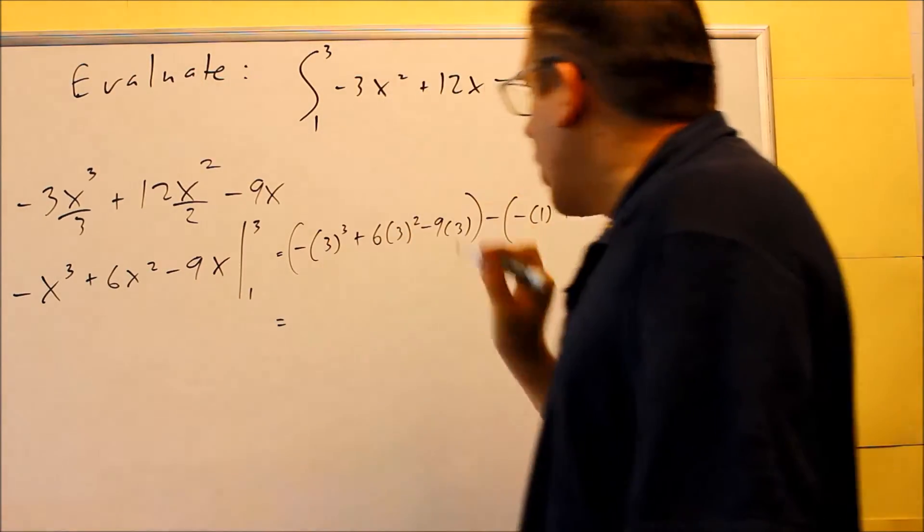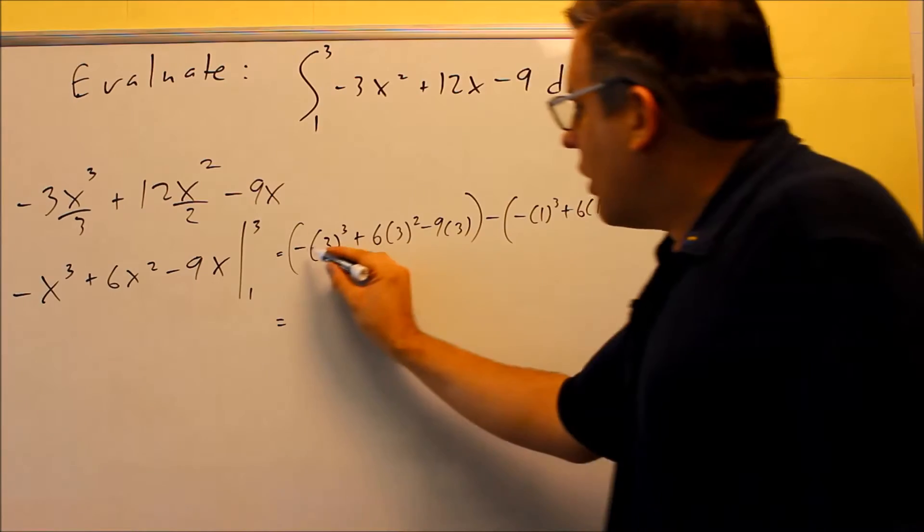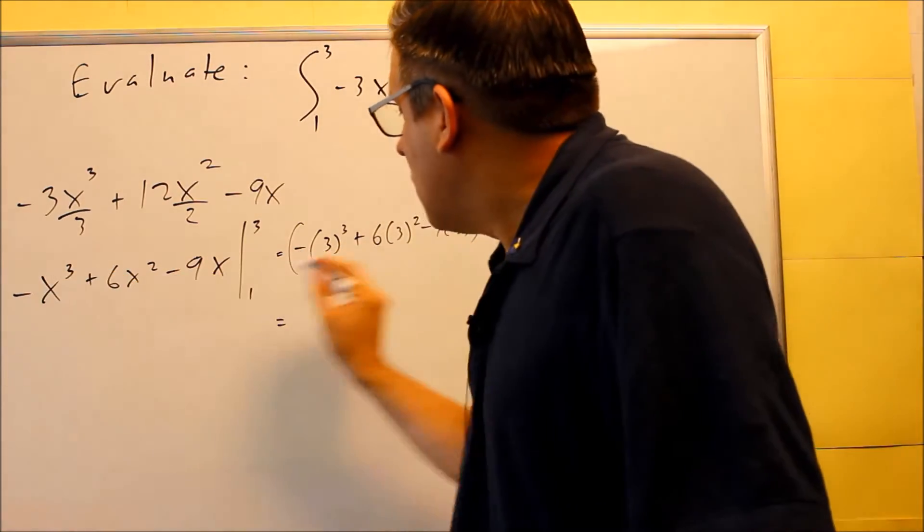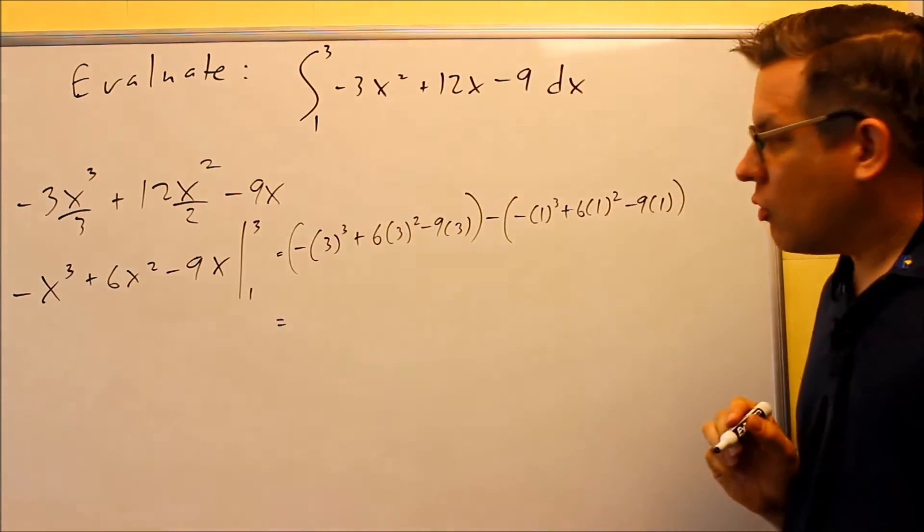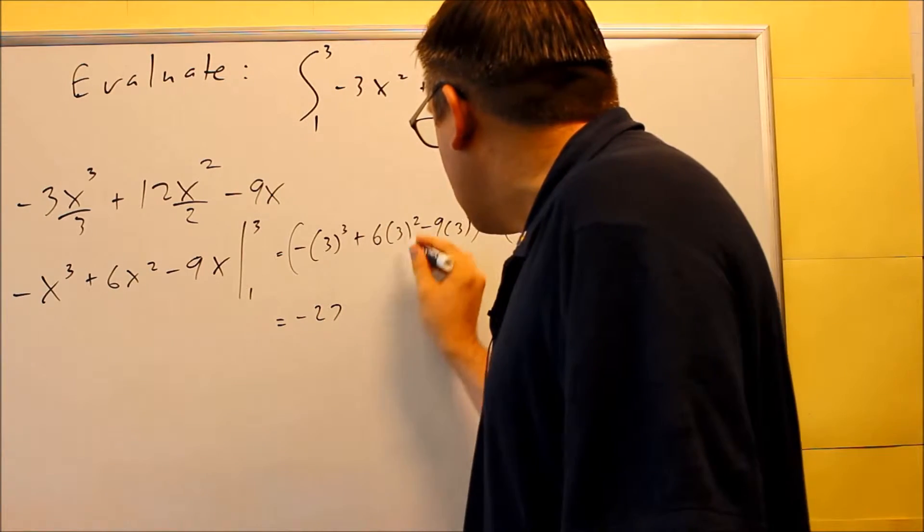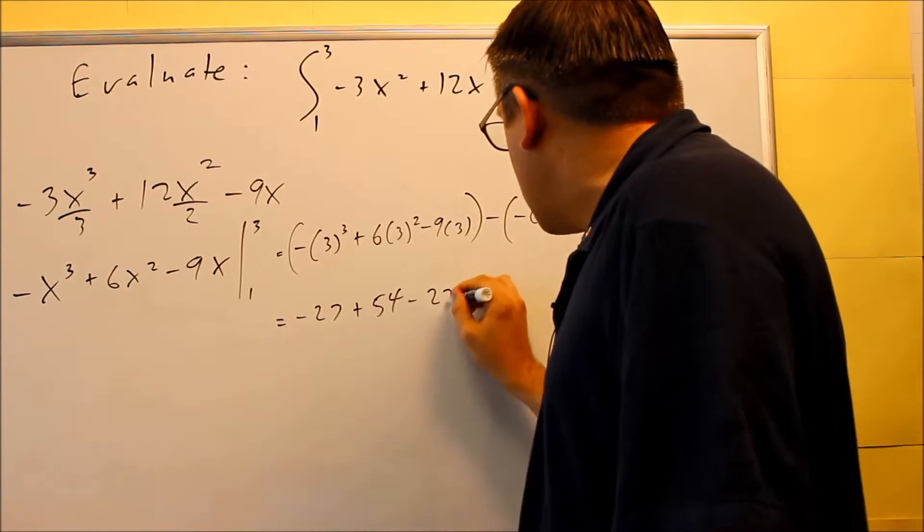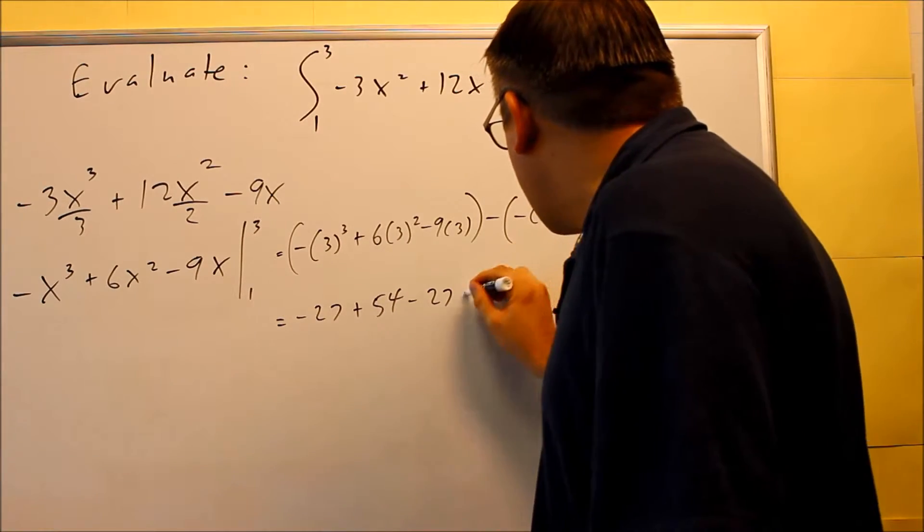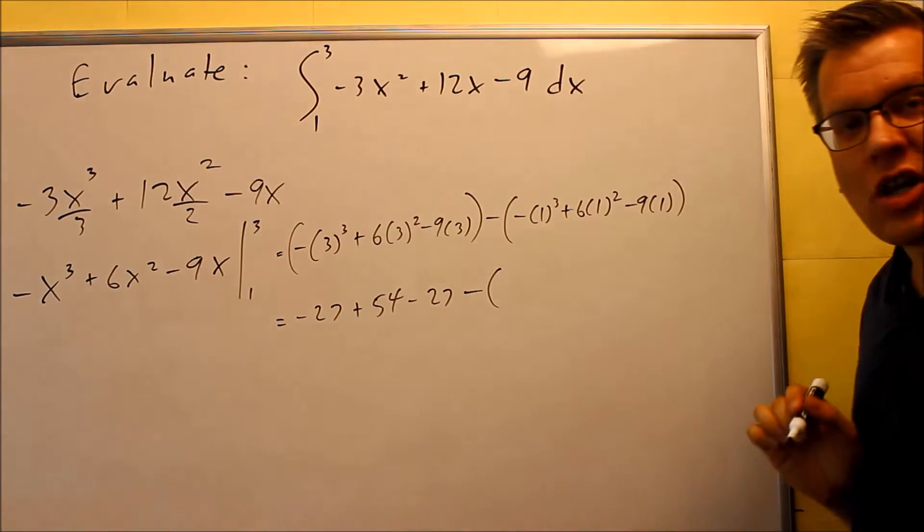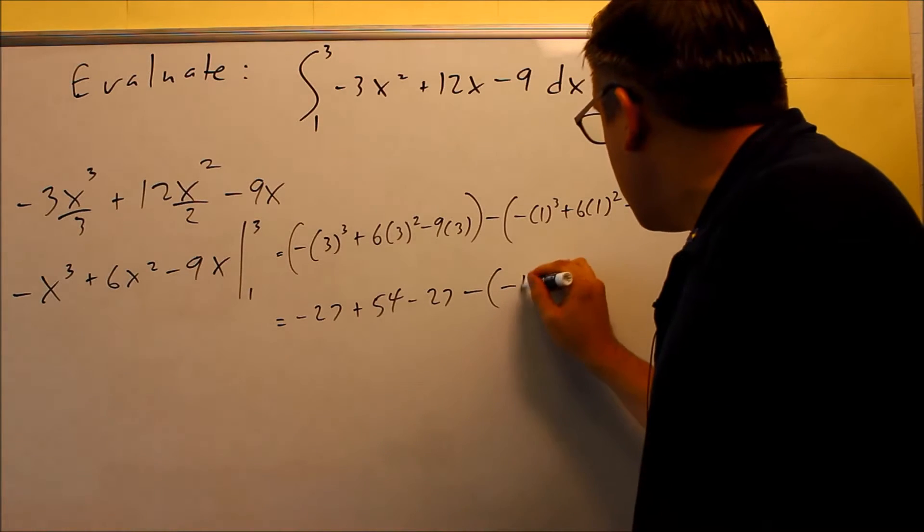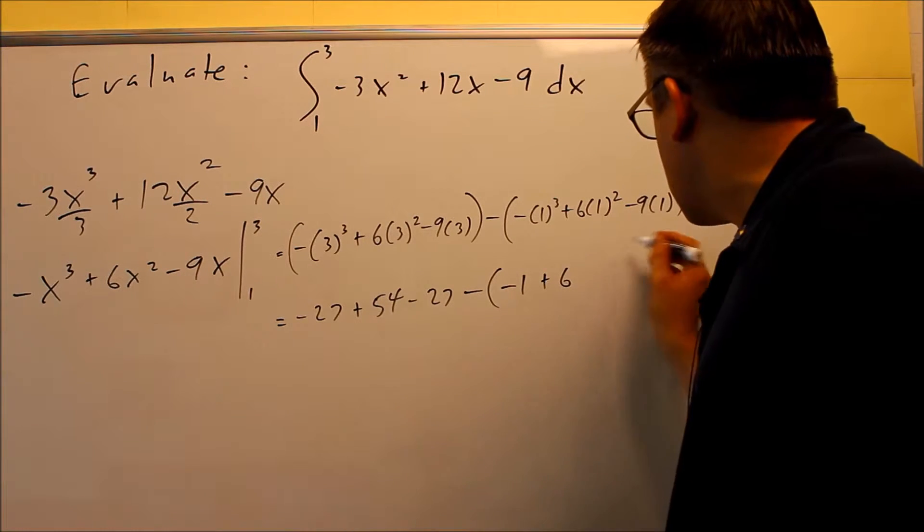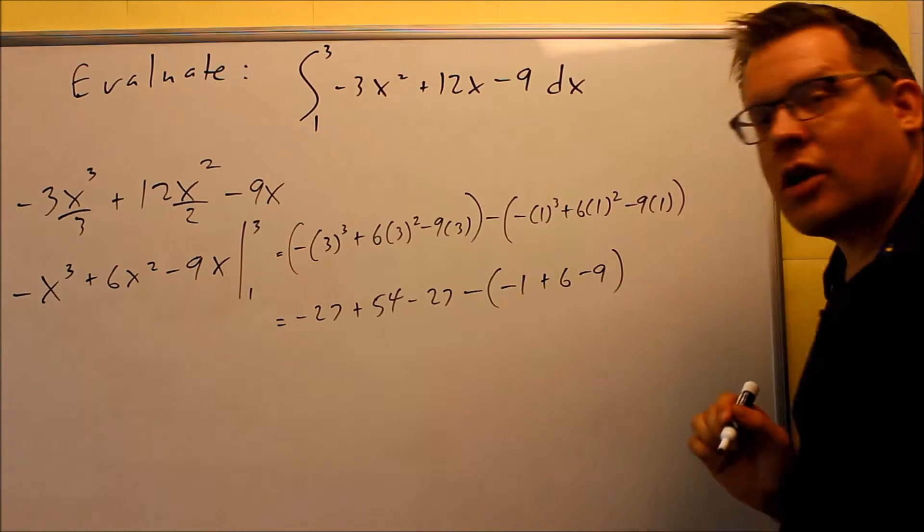So now, it's just a matter of working all this out. The negative here is on the outside, so the 3 is the only one that we're raising to a power of 3. You get -27 there. This next one, you're going to get 54 - 27. And then next, we're going to work out all the stuff inside the parentheses first. You get -1 + 6 - 9. That goes in there.